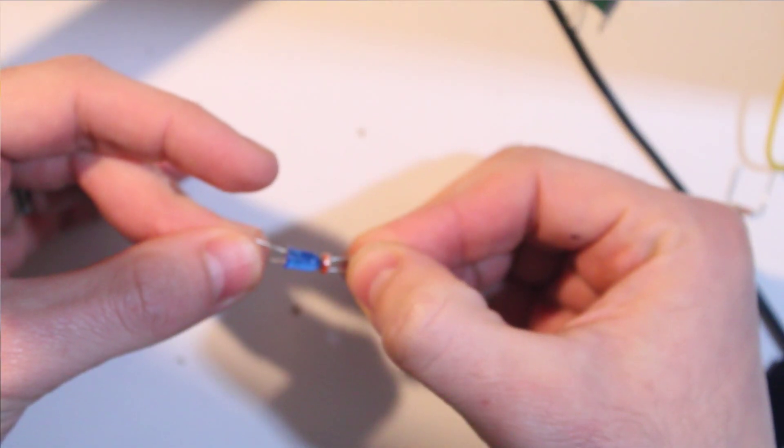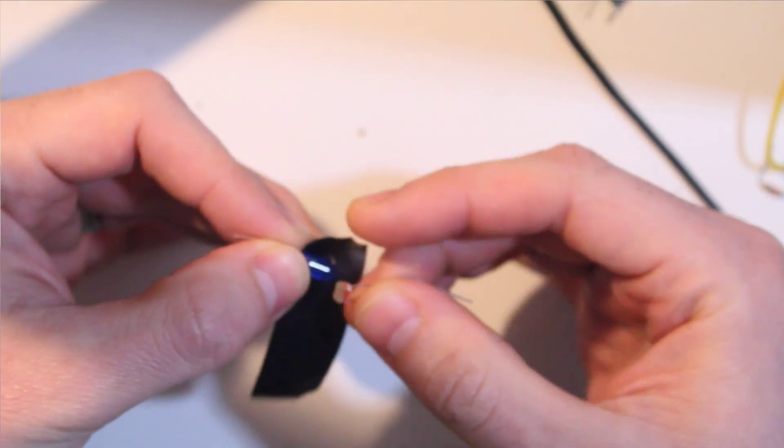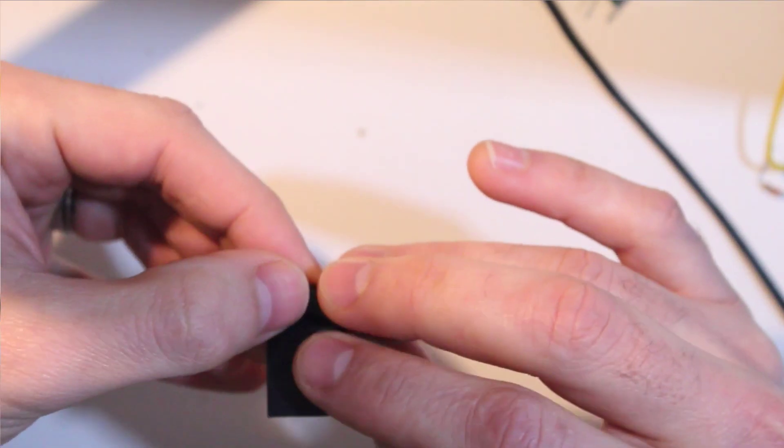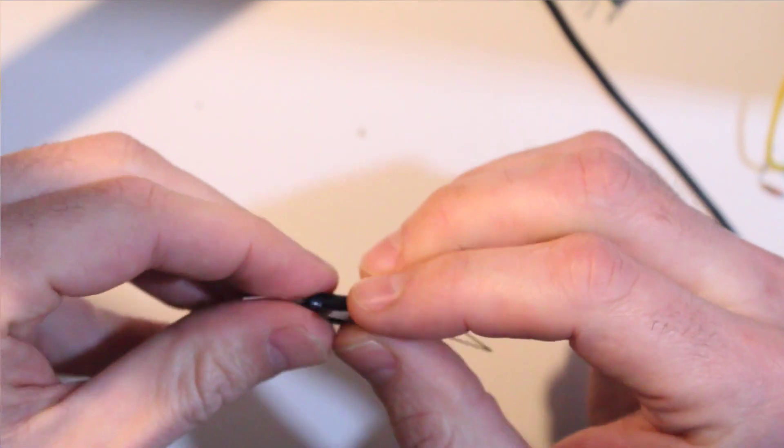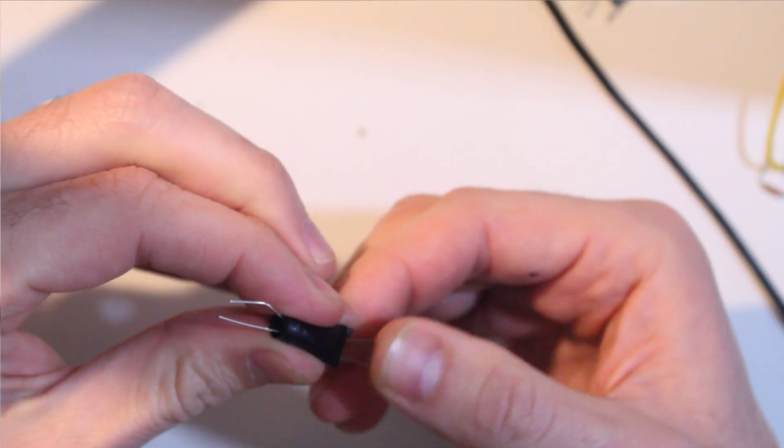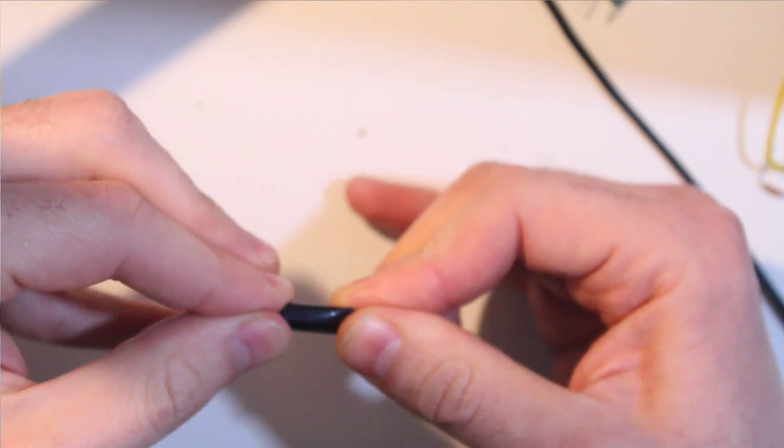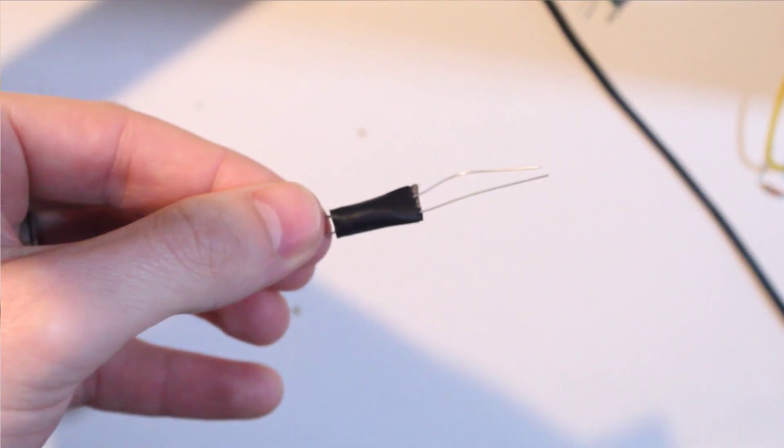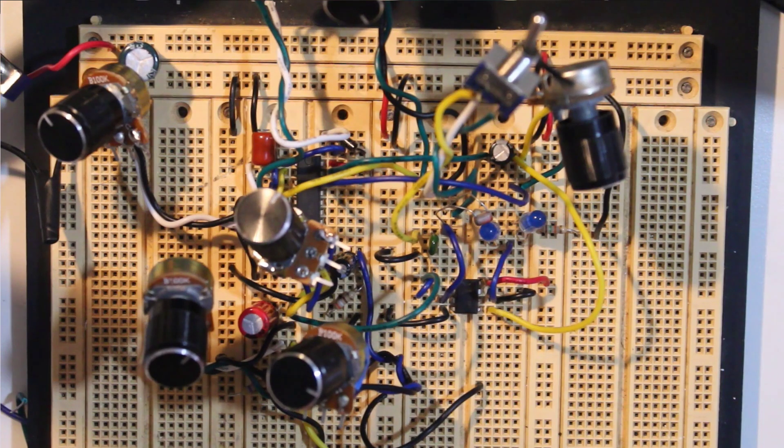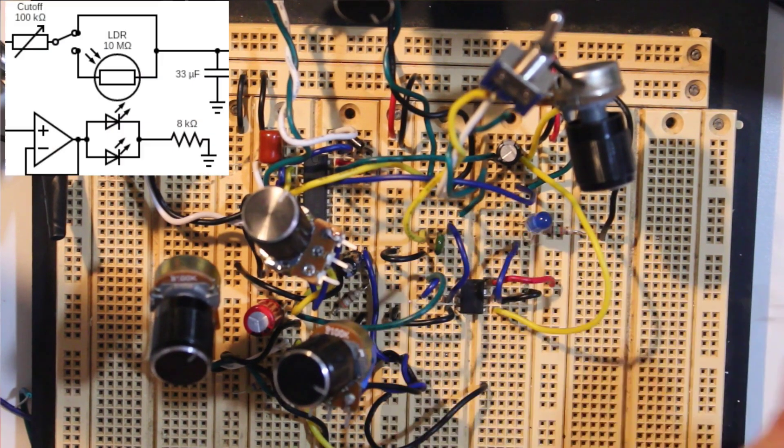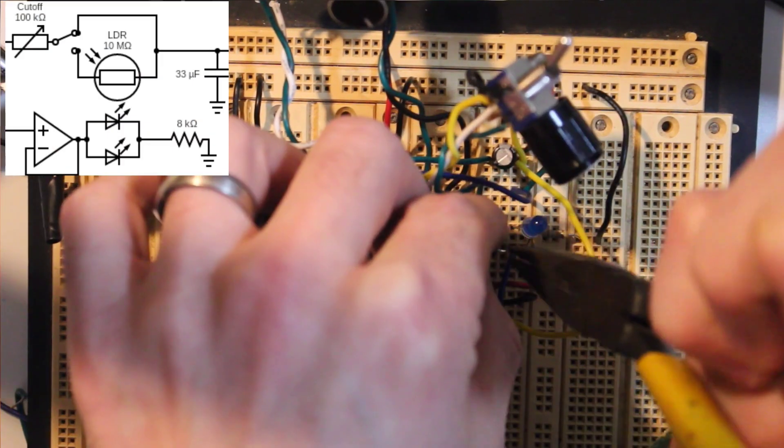So let's make the Vactrol by wrapping these up in electrical tape. You should definitely use heat shrink though. I didn't have any so I just use the next best thing. I'll make another one with heat shrink before I solder it to a board. I'll place one of the LEDs right back where it came from, and the LDR right back where it came from.